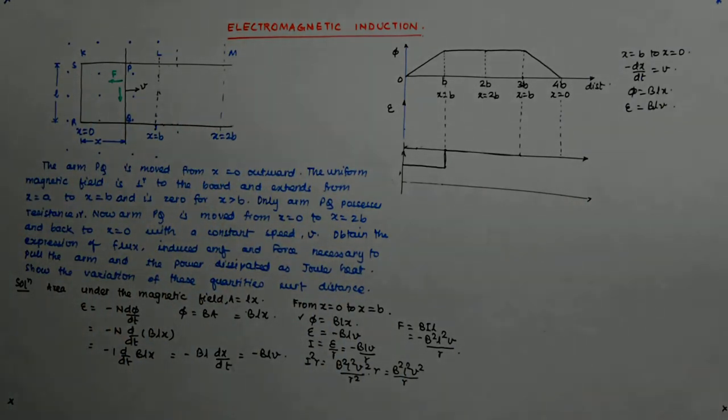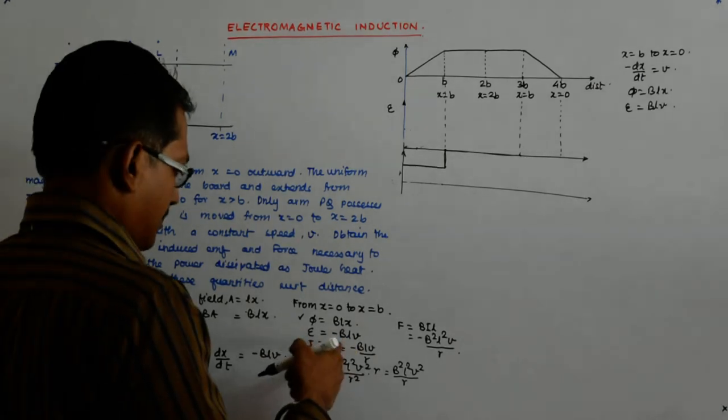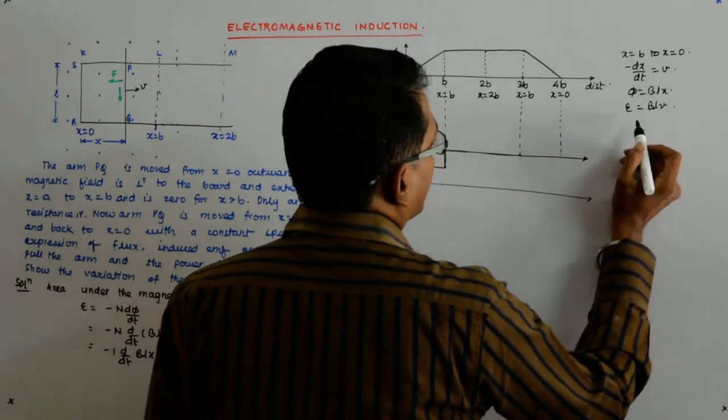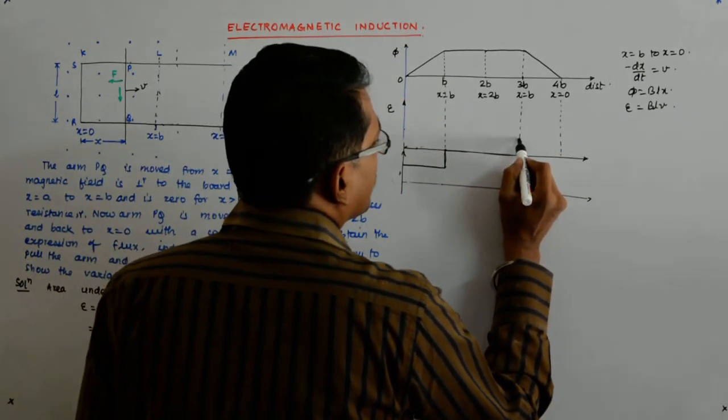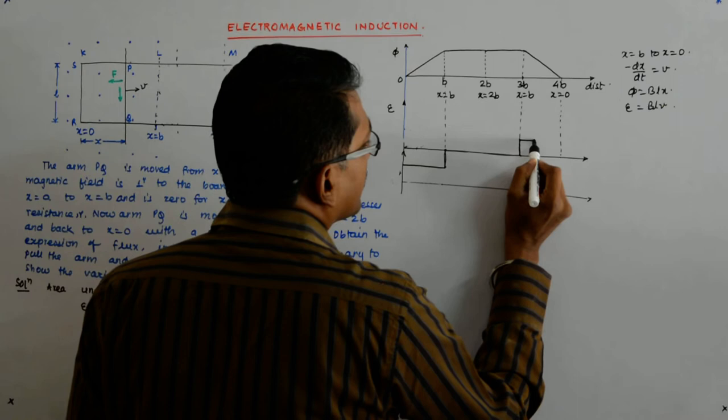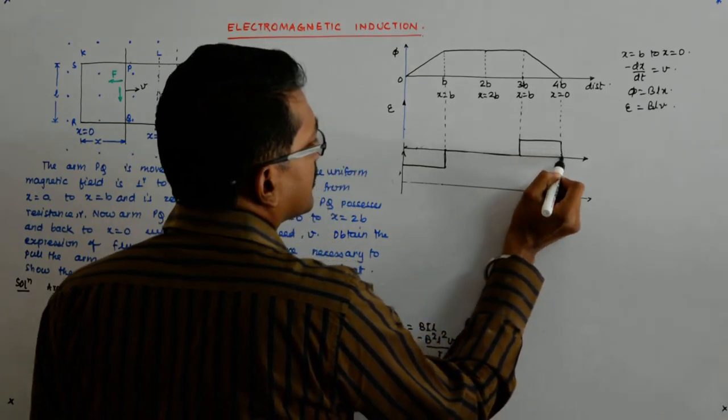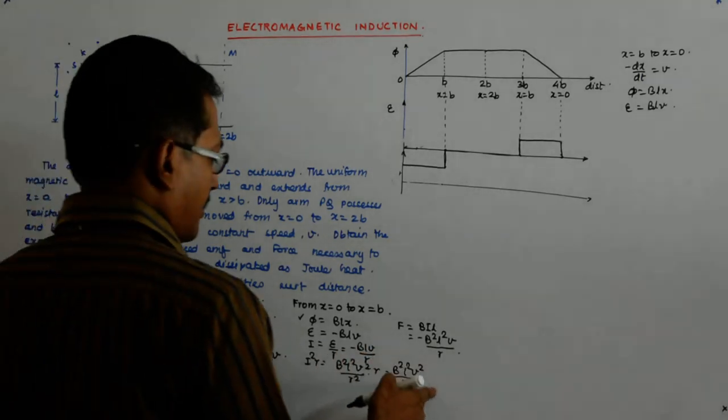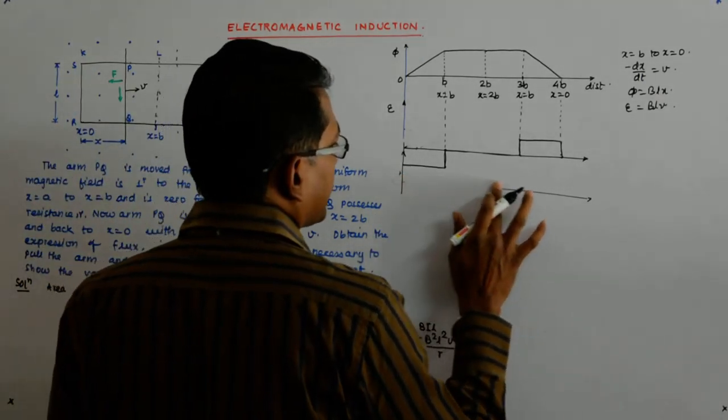Plus, because here that minus dx by dt is plus v, so it is blv. So from here to here, this is my e. How about my joule heating? It is b square l square v square by r. It is dissipation, so has to remain positive.